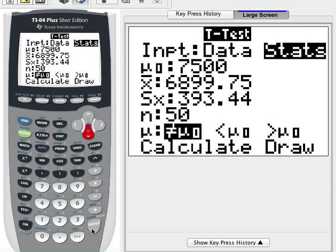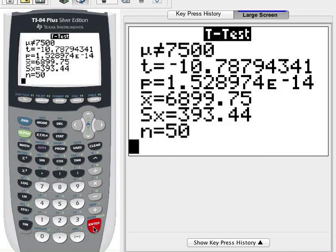And then we can highlight calculate and we'll get our test statistic, the t-score and the p-value. So the t-score is confirmed at negative 10.788. And there is the super low p-value.